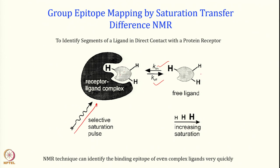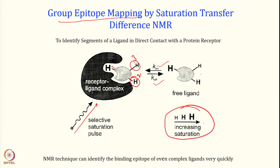Here is a free ligand and here is a receptor-ligand complex. We saturate the receptor. In this experiment we are going to increase the saturation time. The closest epitope will be affected first. As we increase saturation time, the second and third closest epitopes are also affected. So not only do we find out which part is actually interacting, but also how far each part is from the receptor. That is called group epitope mapping — by increasing saturation time and recording various STD NMR sets, we can find out where each epitope is positioned in the receptor binding site.